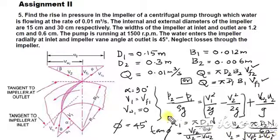So you can get V1 and V2. So you get V1, V2, VW2, u2, and all these quantities.